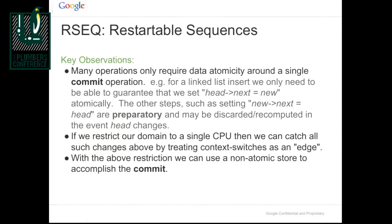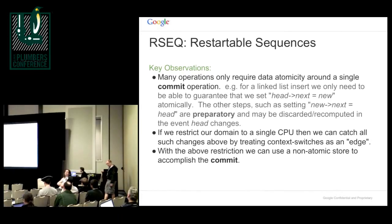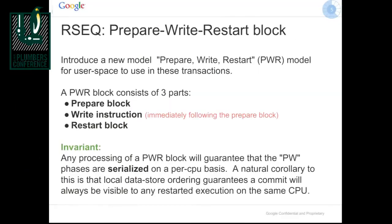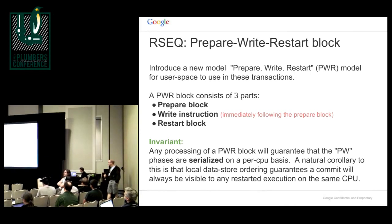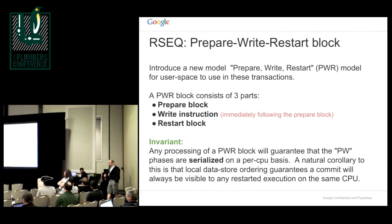The key way we manage this is that we limit what you can commit. By commit, we mean modify data in a way that's observable to other threads or anyone that's not you. It turns out that many useful operations only modify one word once. So we have this three-phase setup: we do preparation, we issue a single write, and we also have a restart block if anything goes wrong. From what user space can observe, the prepare block and the write instruction execute entirely without being migrated or preempted — it's like we can turn off preemption in user space. You basically get a per-CPU software transaction, with a very limited write set and the write has to be at the end.